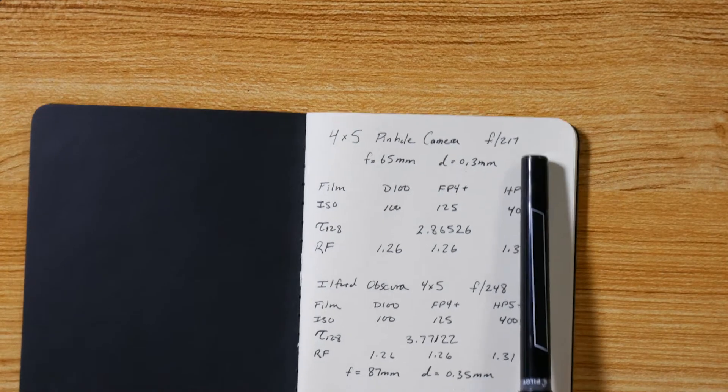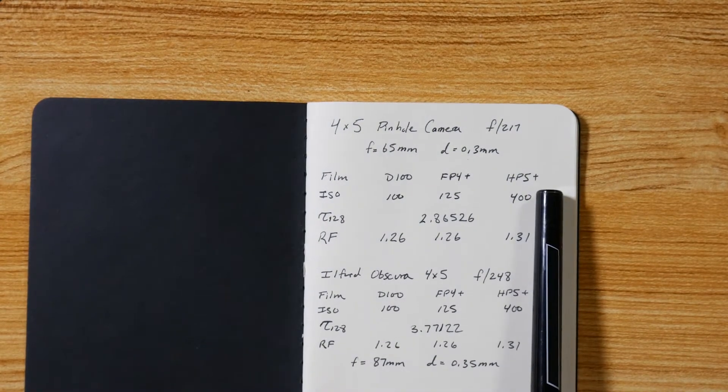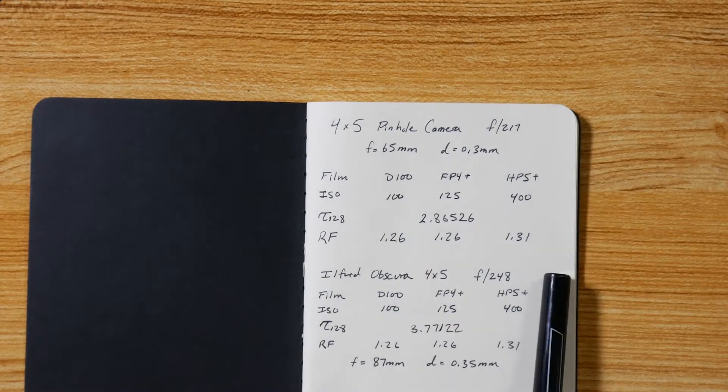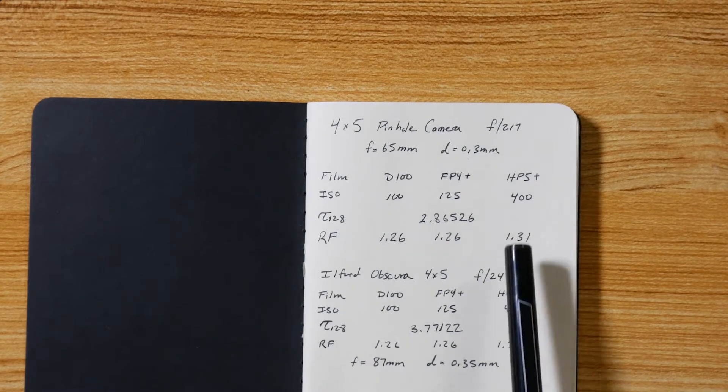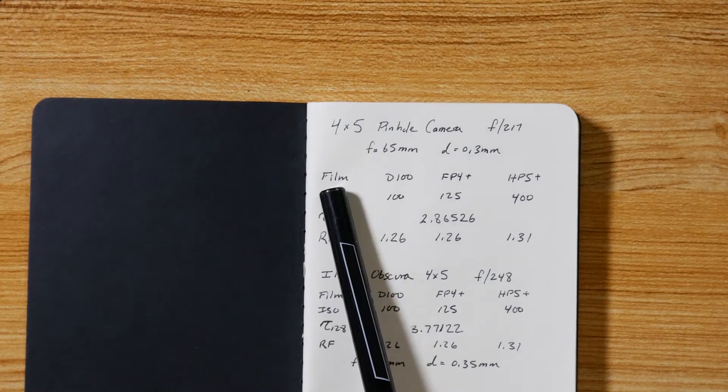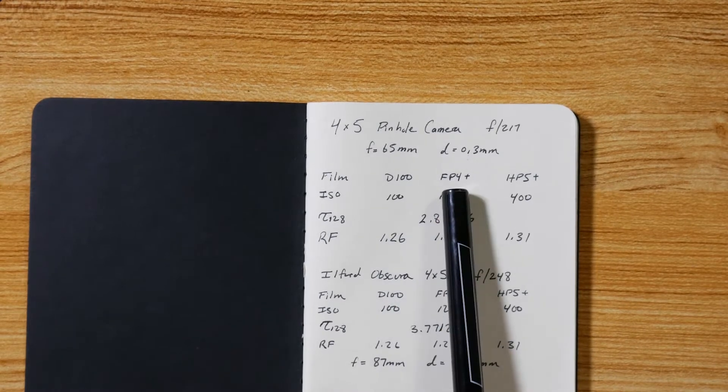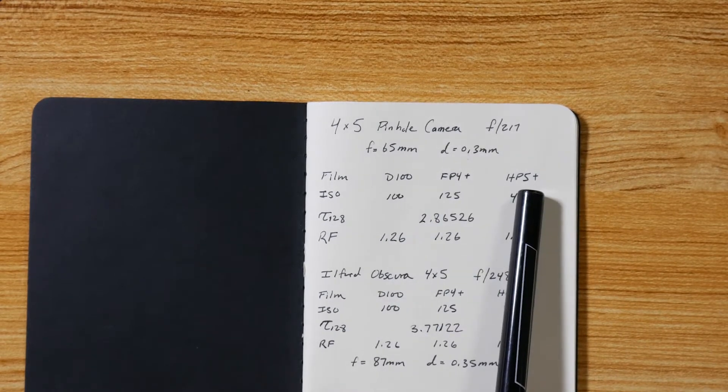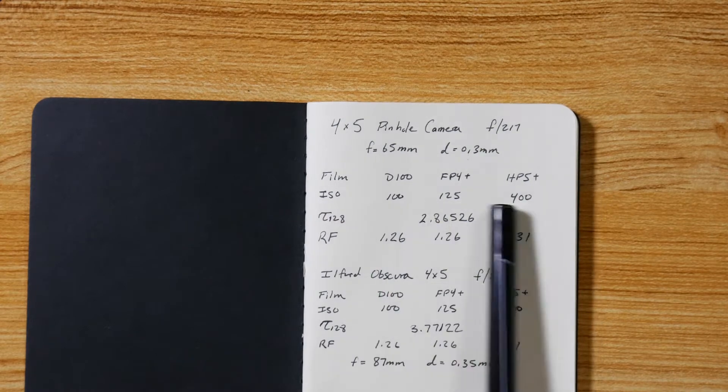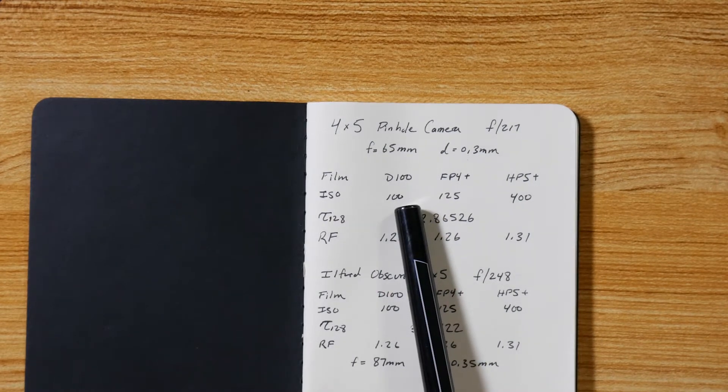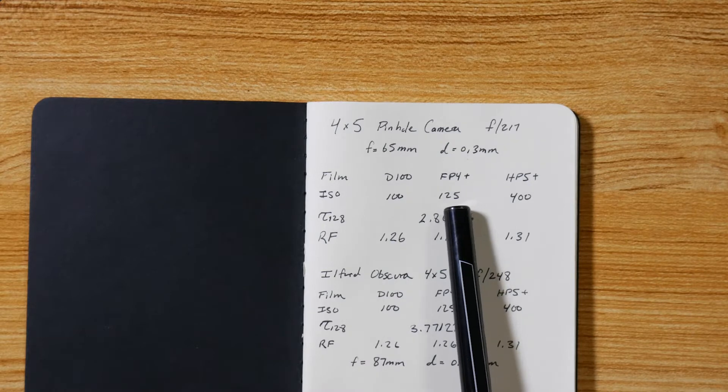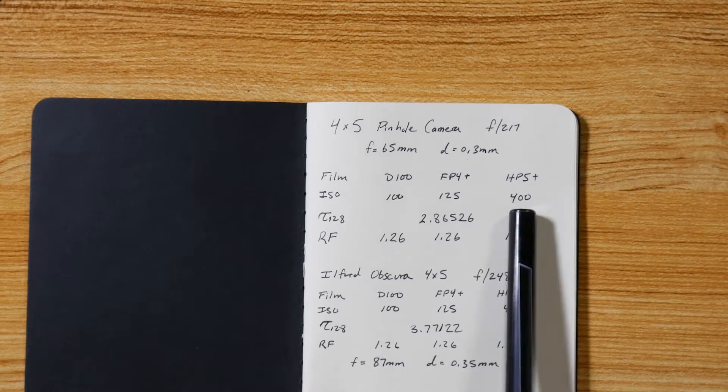Then I make a table for all the films I use. Maybe you only use one film, maybe use a couple films. It's good to write all the films that you're planning on using down just in case. In this case I'm using Ilford films 4x5 films: Delta 100, FP4, and HP5 plus. I write the ISO value of those films down - Delta 100 is a 100 speed film, and these other two are 125 and 400 speed films.